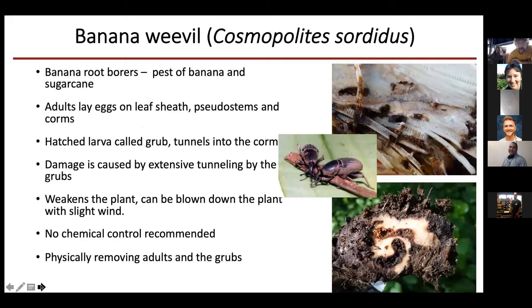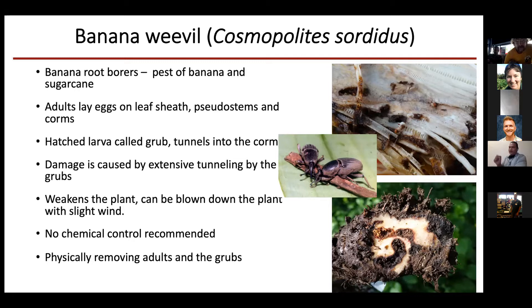The first pest is banana weevil. The scientific name is Cosmopolites sordidus. It's also called banana root borer, and it's mainly a pest of banana and sugarcane. As you can see in this slide, these are the adults — they are around two centimeters in length, very small. The adults will lay eggs on leaf sheaths, pseudostem, and corms — outside of the soil, above ground — even though they are soil weevils.